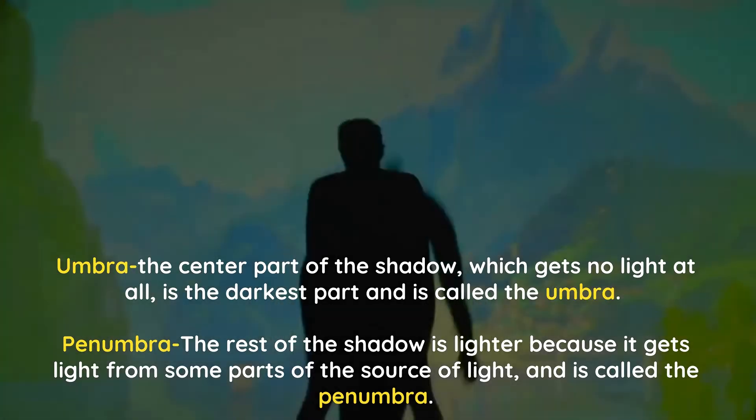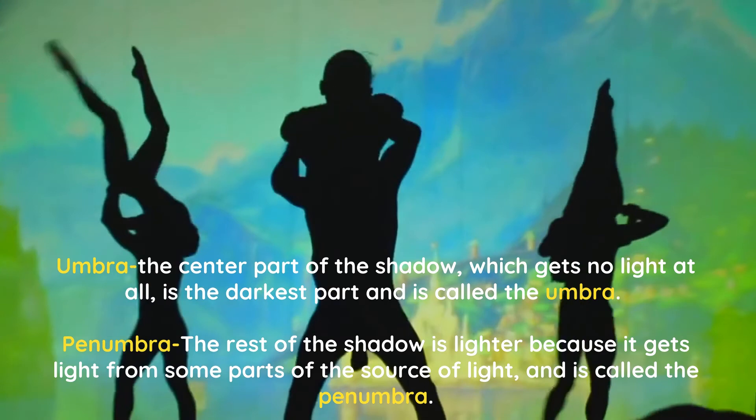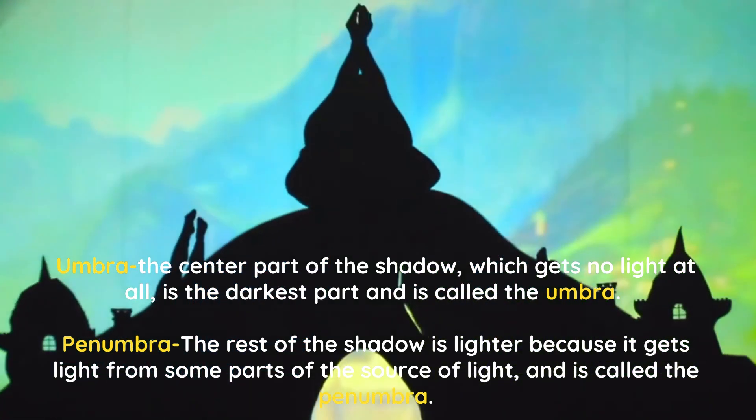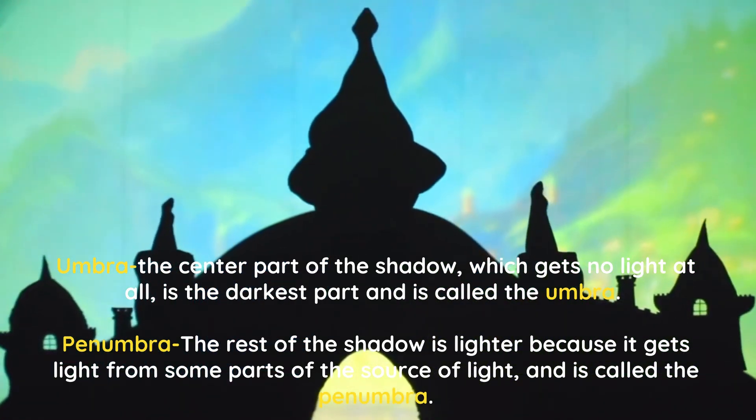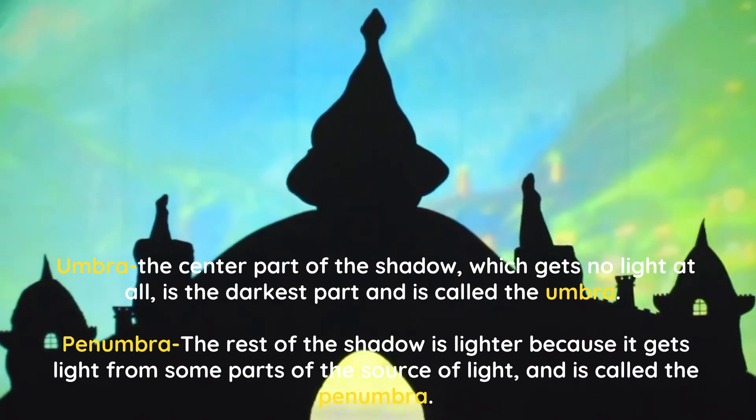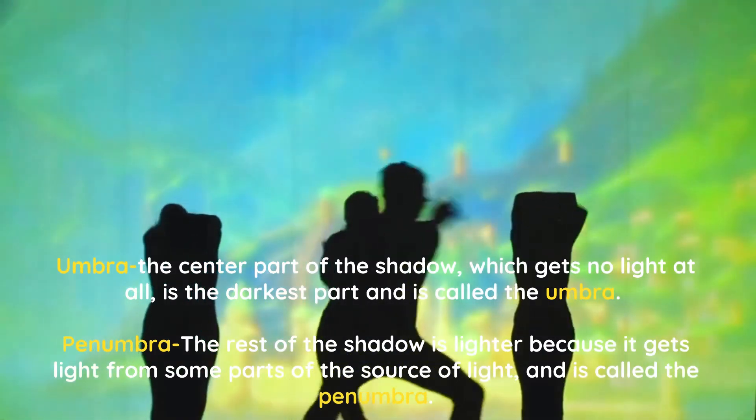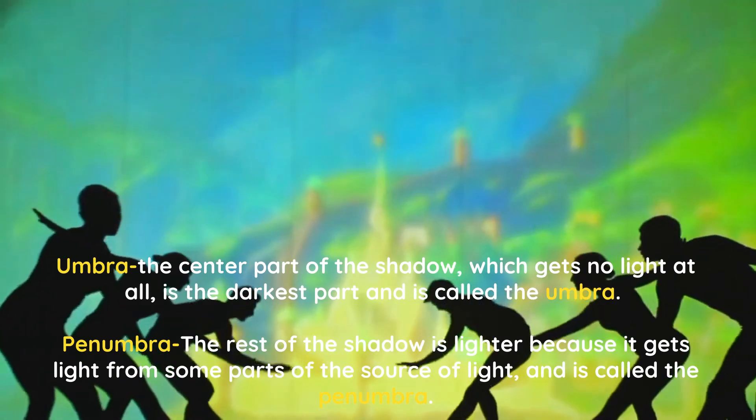Trivia time. Do you know that the center part of the shadow, which gets no light at all, is the darkest part and is called the umbra? The rest of the shadow is lighter because it gets light from some parts of the source of light and is called the penumbra.